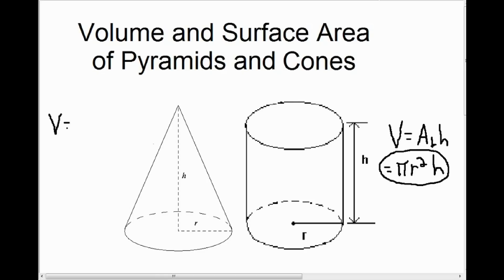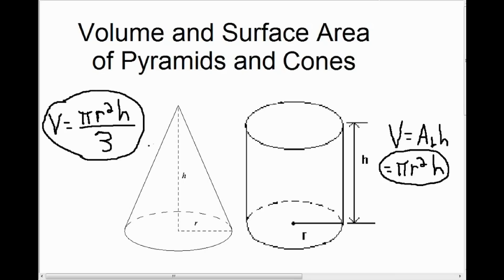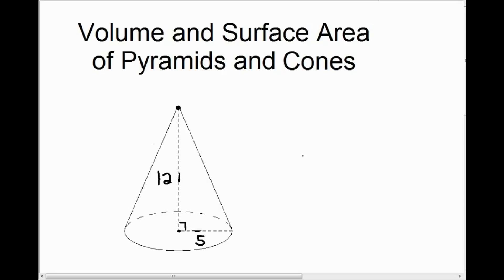The equation for the volume of a cone is: area of the base — the area of the circle on the bottom, which is pi r squared — times the height, divided by three. So to calculate the volume of a cone, we need two pieces of information: the radius of the circle and the height of the cone from the bottom to the top at a right angle.